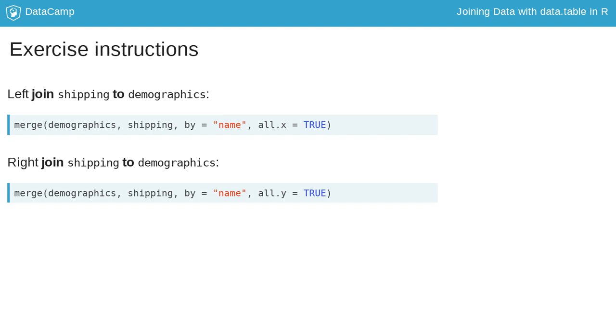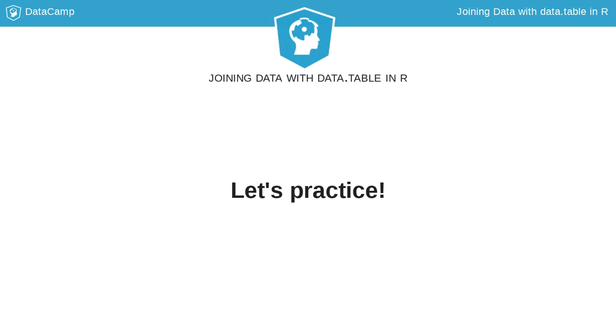So if we ask you to join the shipping data table to the demographics data table, the demographics data table should always be on the left side of the join, the first argument of the merge function. Go ahead and code some left and right joins.